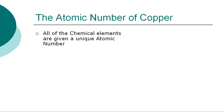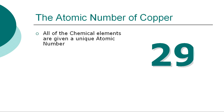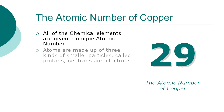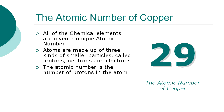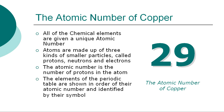All of the chemical elements are given a unique atomic number. The atomic number for copper is 29. Atoms are made up of three kinds of smaller particles, called protons, neutrons, and electrons. The atomic number is the number of protons in the atom.